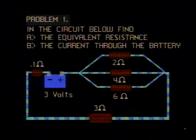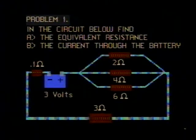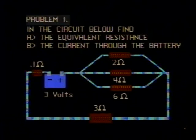Problem number one reads, in the circuit below, find A, the equivalent resistance, and B, the current through the battery.